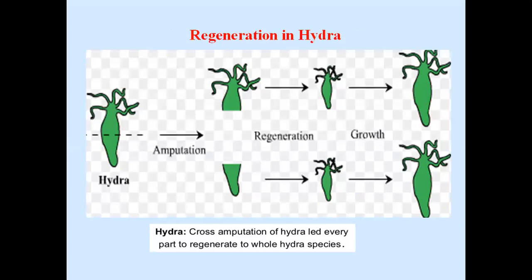Now you can see this: this is hydra — इसका amputation हुआ। We cut it — this is the upper part and this is the lower part. After regeneration, this developed into complete hydra — इसने अपना lower part develop कर लिया, और इसने अपना upper part develop कर लिया। इनकी growth हुई और complete दो hydra हमें मिल गए। Cross amputation of hydra led every part to regenerate to whole hydra species।